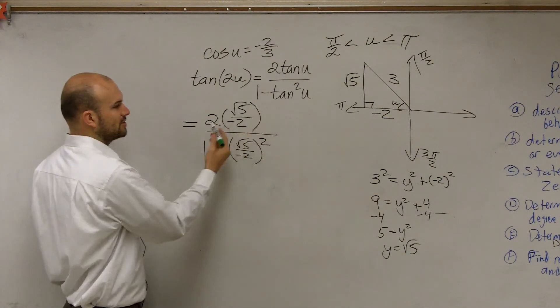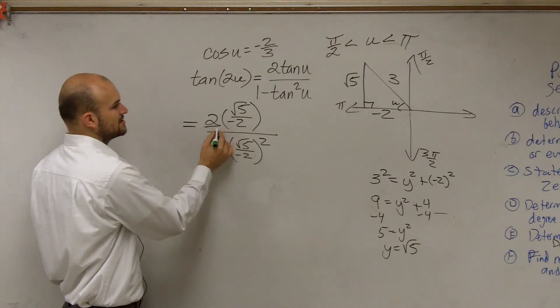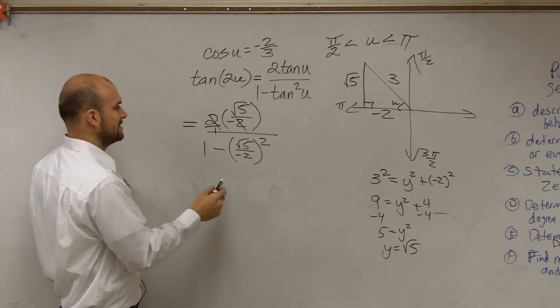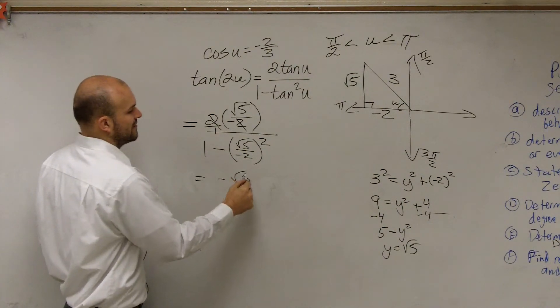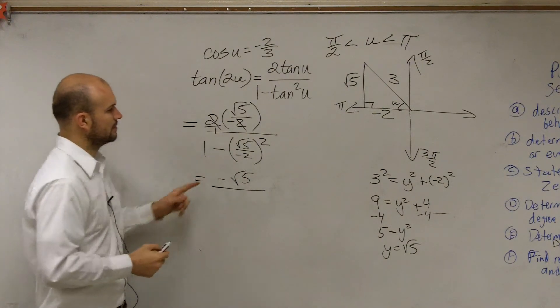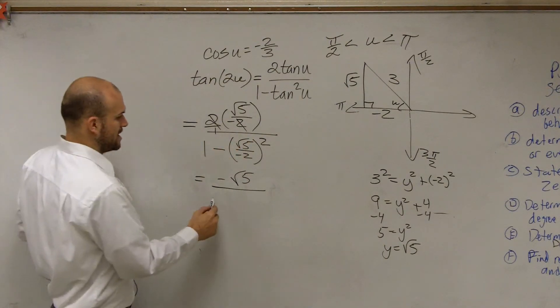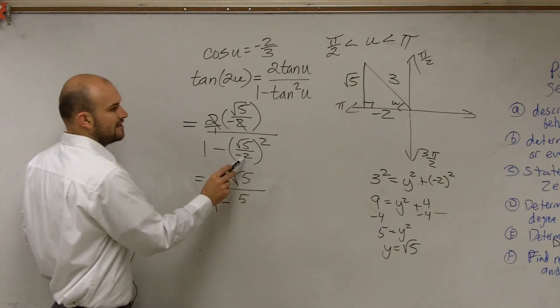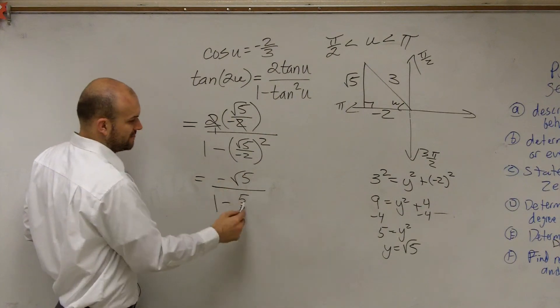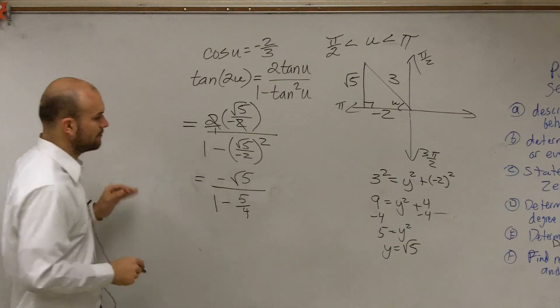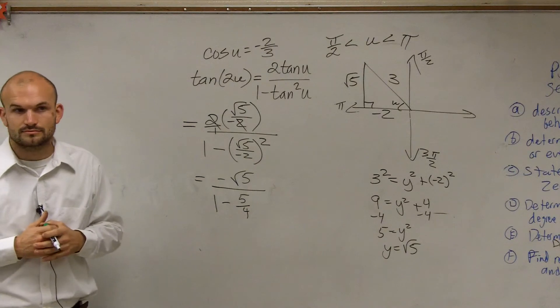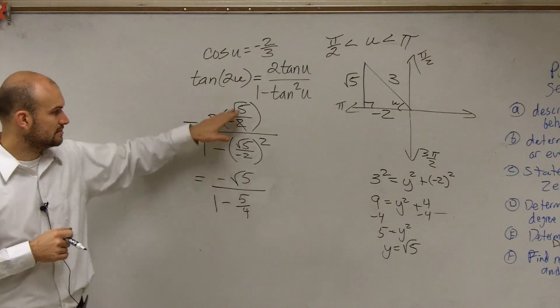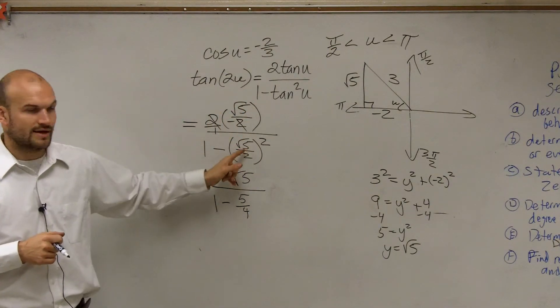Does everybody follow what I've done so far? Let's multiply this across. When I multiply this across, I know that those are going to divide up to 1, and I'm just left with -√5 over... when I square this, I'm going to have 1 minus (√5 × √5) squared is going to be 5, and then (-2)² is going to be a positive 4. So I get 1 - 5/4.